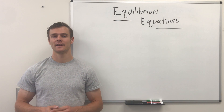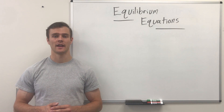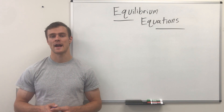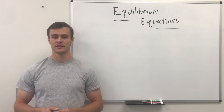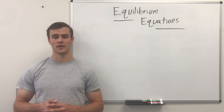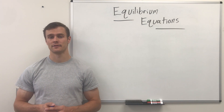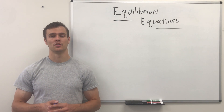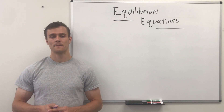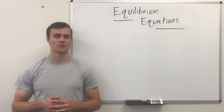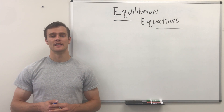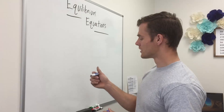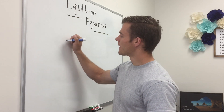You use them all the time in statics and in other engineering classes that you're going to take. An object in equilibrium is an object where the sum of the forces acting on that object equals zero. That means the object is either not moving or it's moving at a constant velocity. We won't get much into that in statics, but an object that is not moving — in other words, static — is often what we'll be dealing with in engineering.